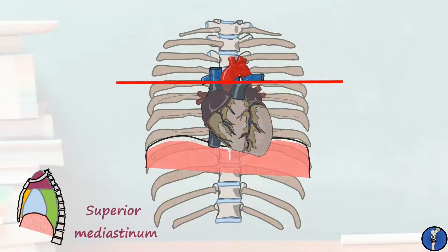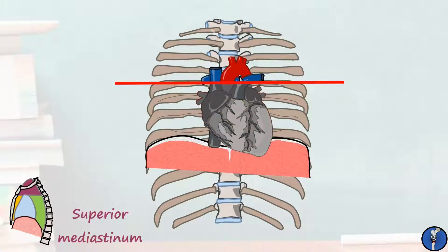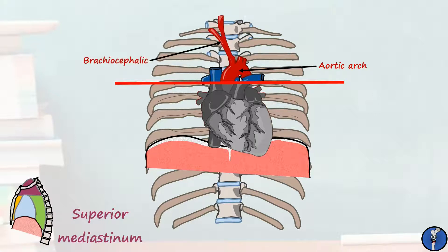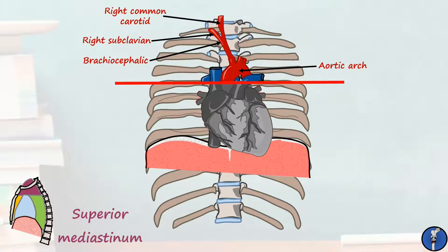We'll begin with the superior mediastinum, which is the most complicated one. All of the structures coming out the top of the heart first pass into the superior mediastinum. Starting with the arteries, we have the arch of the aorta, which curves through the lower part of the superior mediastinum, and from this comes the brachiocephalic artery, which branches to provide the right subclavian and left common carotid arteries. The other two branches of the aortic arch are also in the superior mediastinum: the left common carotid artery and the left subclavian artery.